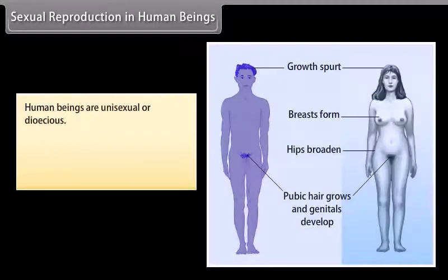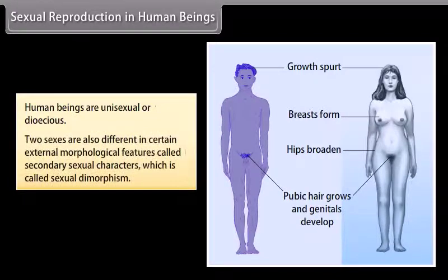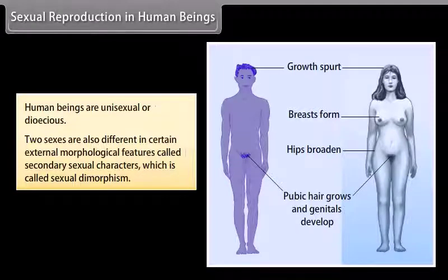Human beings are unisexual or dioecious. The two sexes are also different in certain external morphological features called secondary sexual characters, which is called sexual dimorphism.